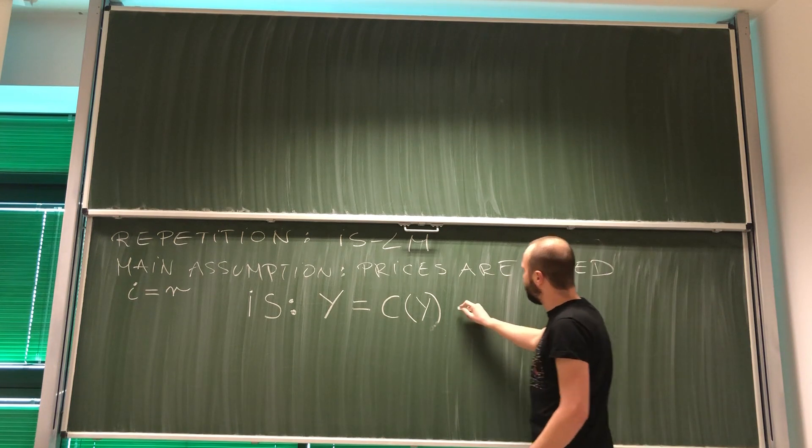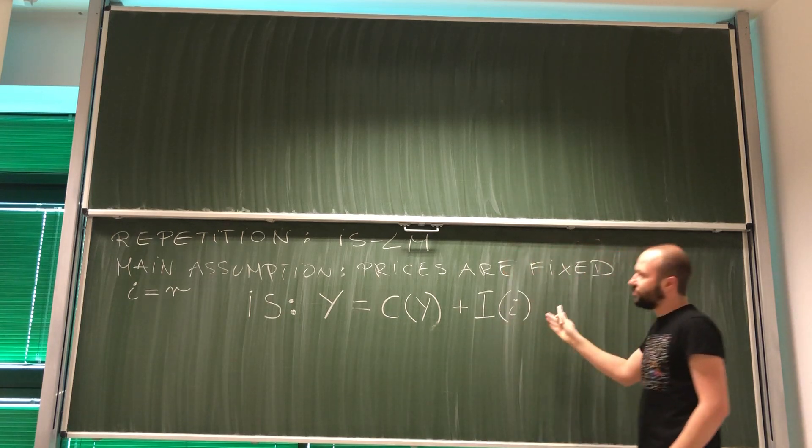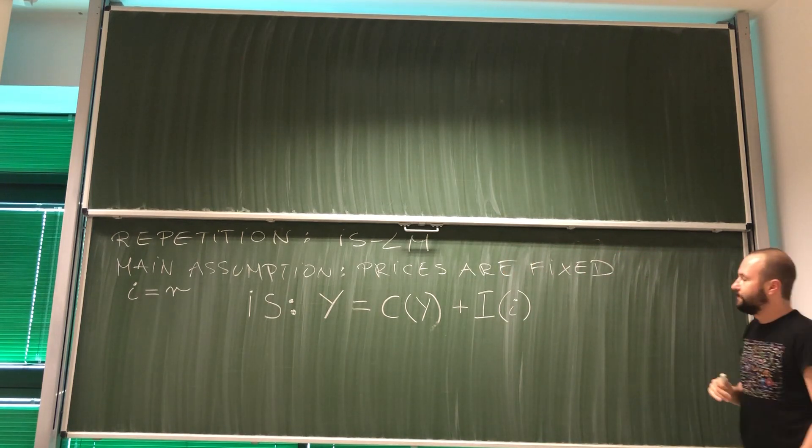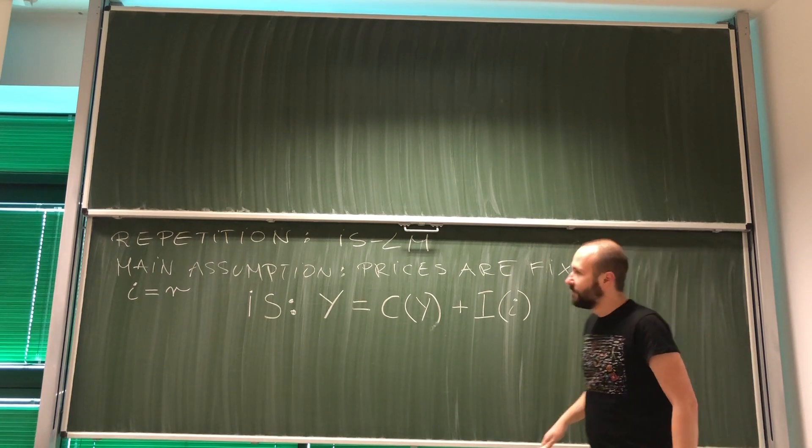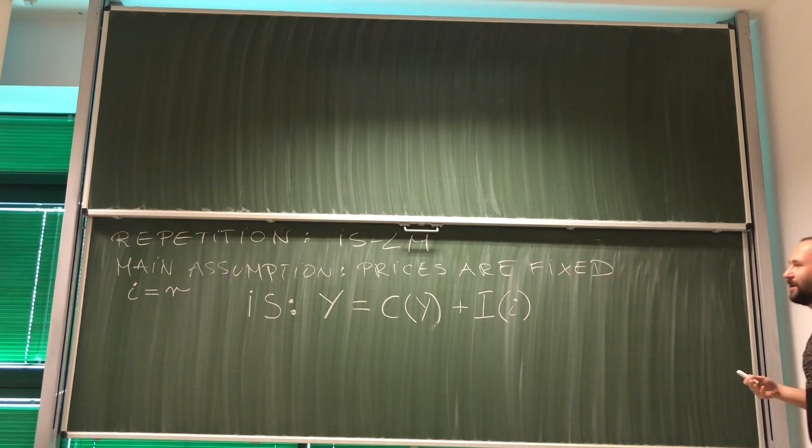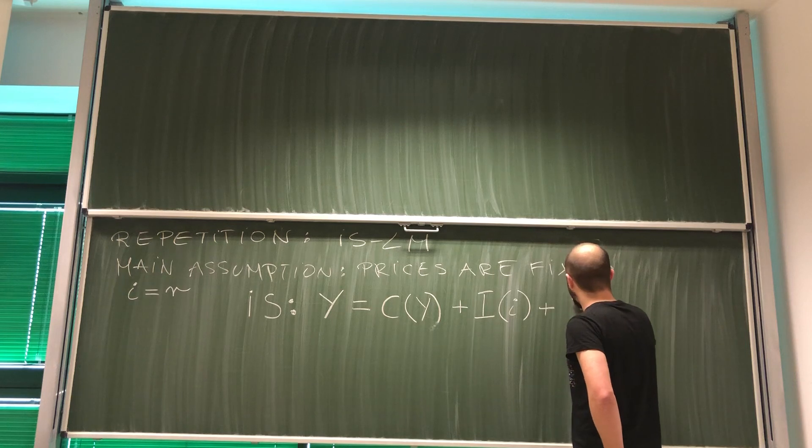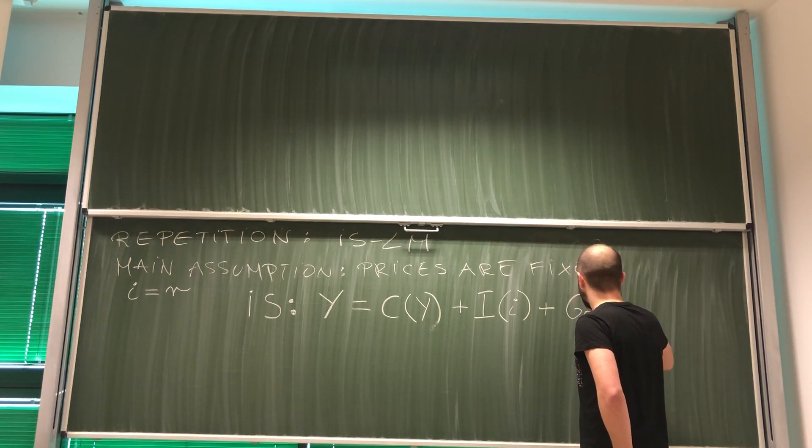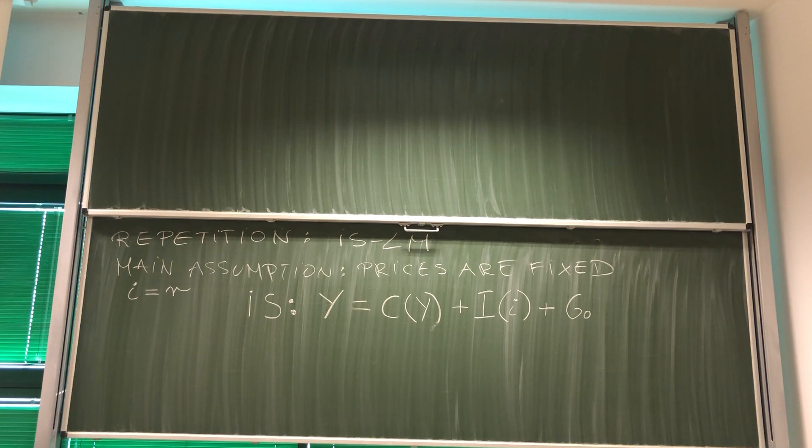The second component is investment. Investment is a function of real interest rate. It's a function of real interest rate, but in this model nominal and real interest rate are the same. So it's a function of interest rate i. And finally, we will have exogenously given government spending.